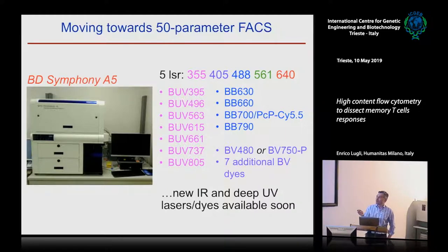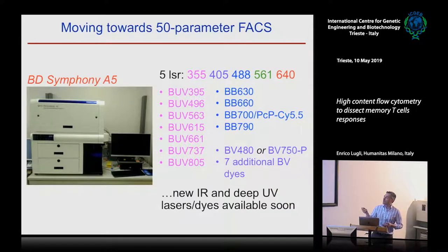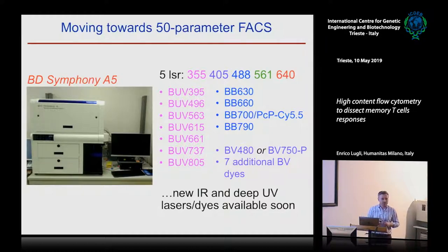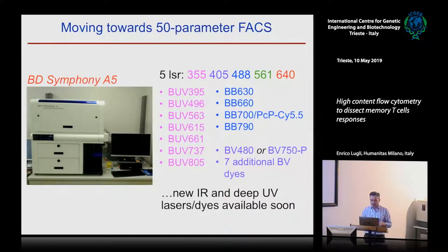This instrument is from Becton Dickinson — the Symphony A5. There are also other instruments like Biorad that can measure up to 30 parameters. This instrument has the usual lasers: 405, 488, 561, and 640 nm. We added a UV laser, which excites seven new conjugates — new fluorochromes we could add to our array. Then there are other synthetic fluorochromes — the so-called brilliant blue dyes — like a bright replacement for PerCP-Cy5.5, which is a bit weak, and molecules like BV480 and BV786, etc. This machine will also be modified by integrating new infrared and DPV lasers. There are already 10 to 15 fluorochromes ready to be excited by these lasers, with the idea to jump from 30 to 45 or 50 parameters in the next couple of years.